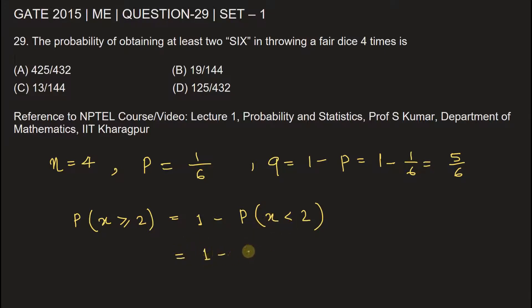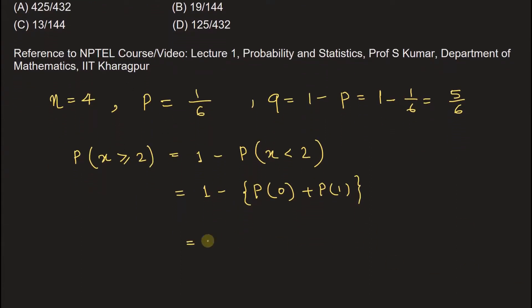This will be one minus p of zero plus p of one. Now p zero is probability of not getting six at all. This will be four C zero, one by six to the power of zero, into five by six to the power of four minus zero, that is three.